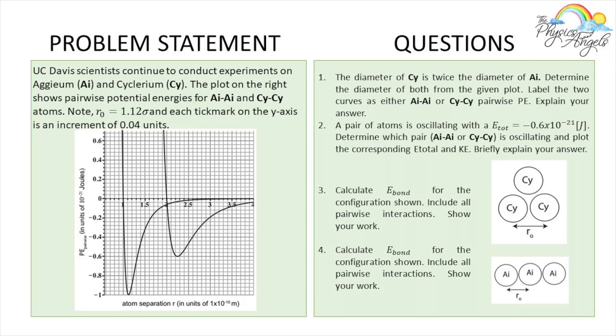UC Davis scientists continue to conduct experiments on Aegeum and Cyclerium. The plot on the right shows pairwise potential energies for Ai-Ai and Cy-Cy atoms. Note, R₀ is 1.12 sigmas and each tick mark on the y-axis is an increment of 0.04 units. The diameter of Cy is twice the diameter of Ai. Determine the diameter of both from the given plot, label the two curves, and explain your answer.